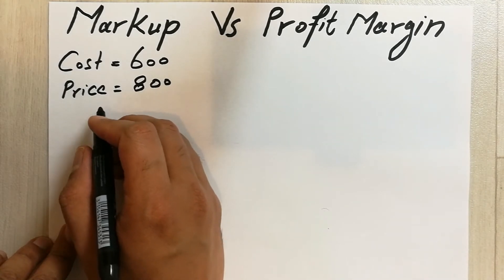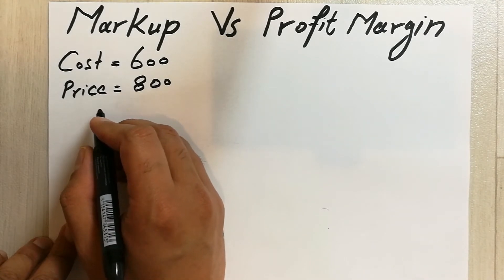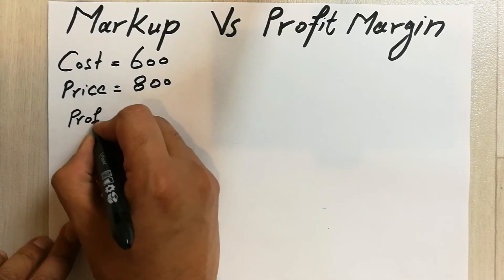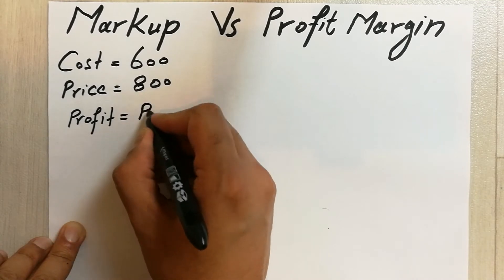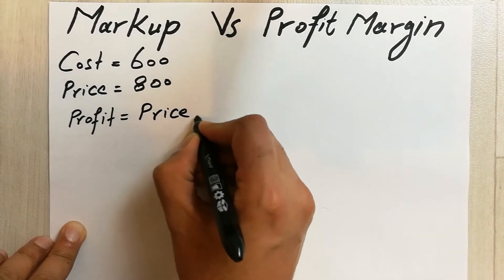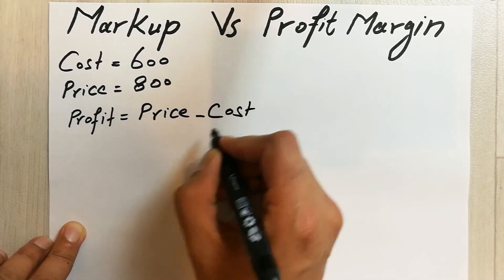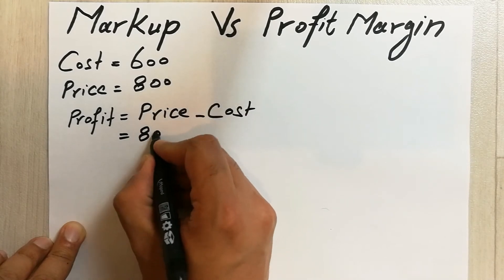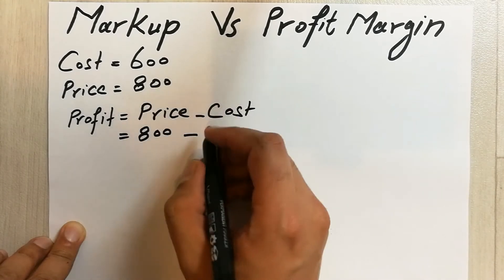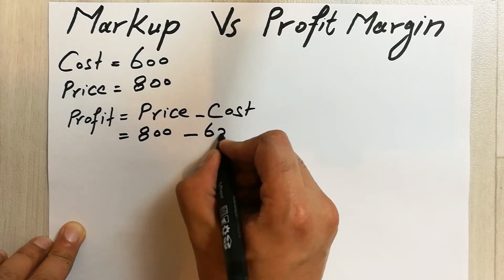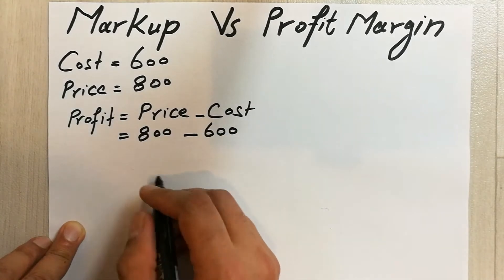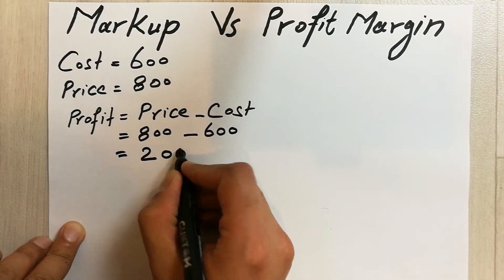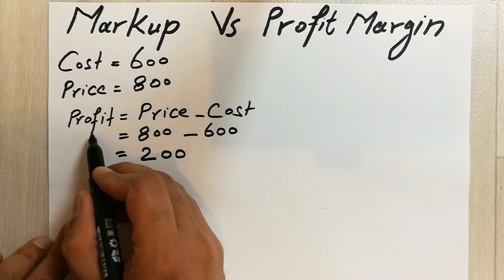In the first step we will find out the profit. The formula to find out the profit is really simple — it's price minus cost. So the price is 800 minus cost 600, and the answer will be 200. This is our gross profit.